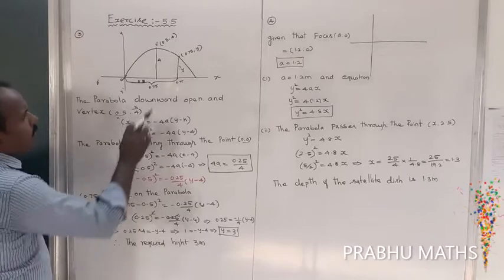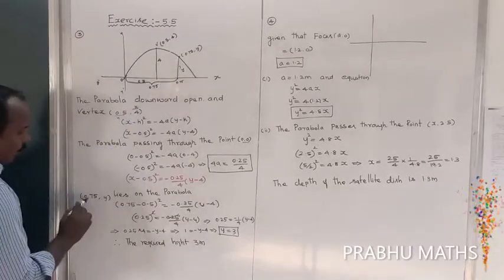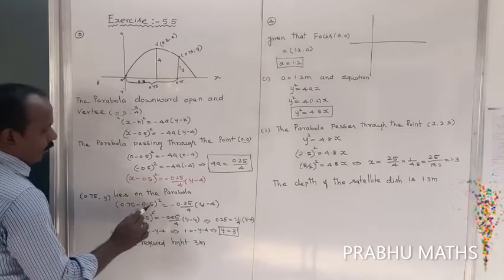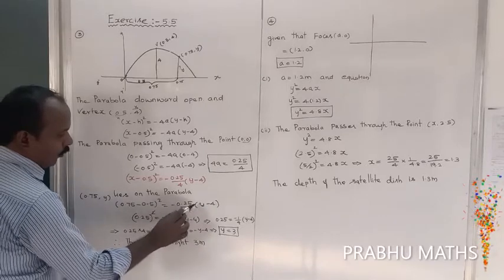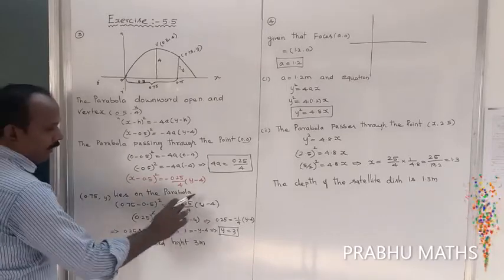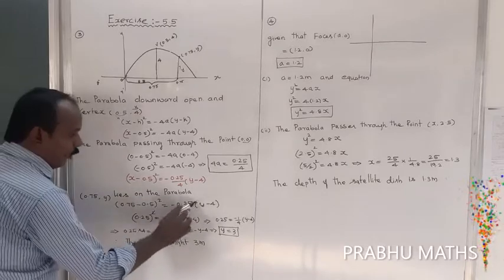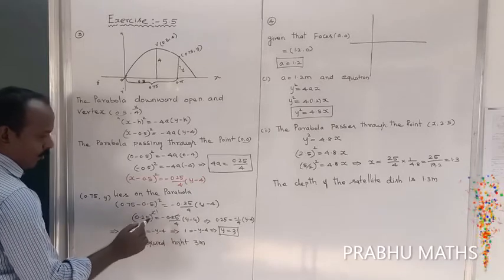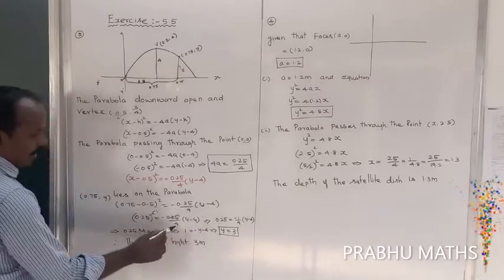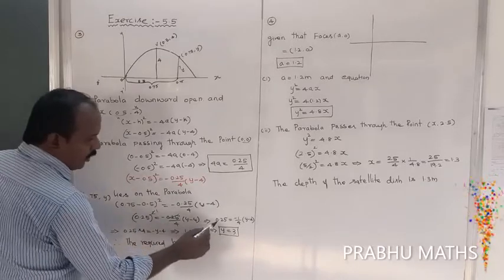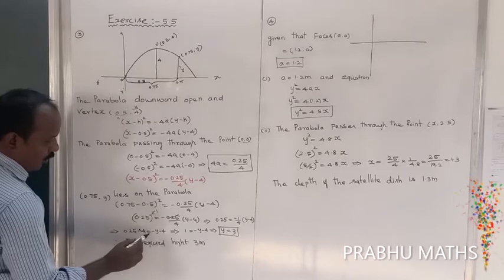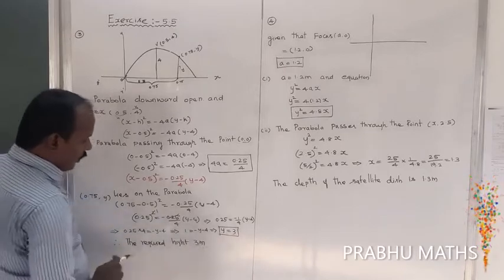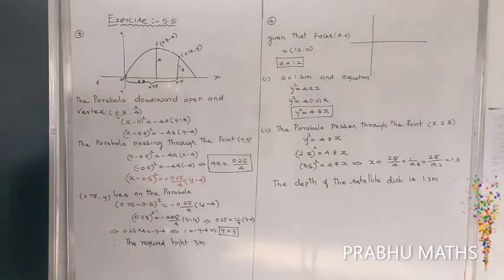So the equation is (x − 0.5)² = −(0.25/4)(y − 4). The parabola passes through (0.75, y). Substituting: (0.75 − 0.5)² = −(0.25/4)(y − 4). Solving: 0.25 = −(0.25/4)(y − 4), which gives y = 3. So the required height is 3 meters.